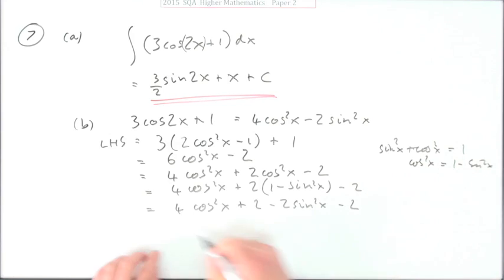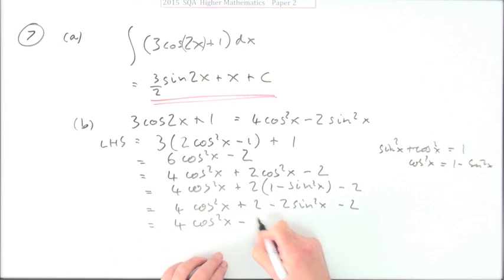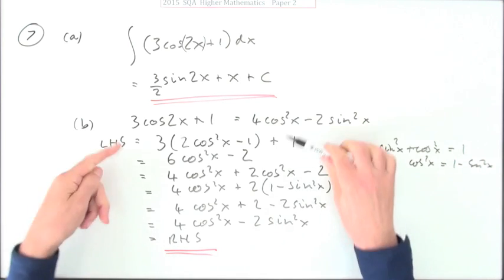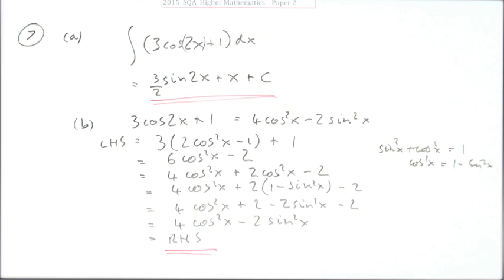And then I'll just tidy up. So 4 cos squared x plus 2 minus 2 sine squared x minus 2 eventually becomes, after quite a number of lines, 4 cos squared x minus 2 sine squared x, which equals what you wanted. Now that was a lot of jiggery-pokery for two marks.